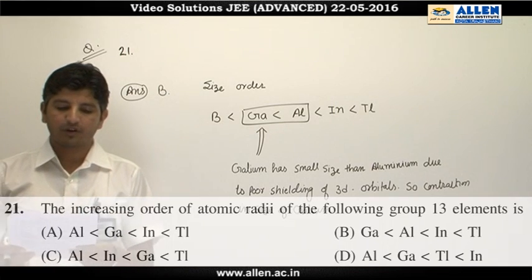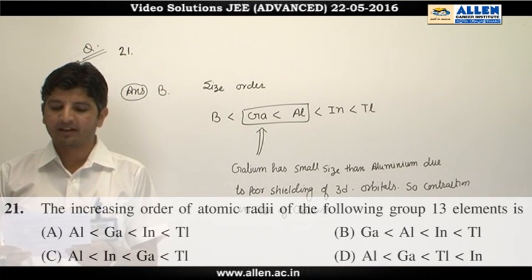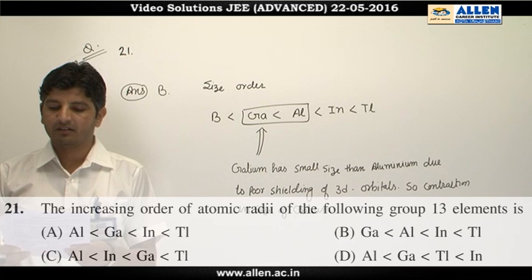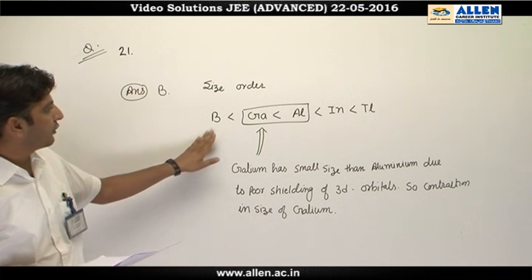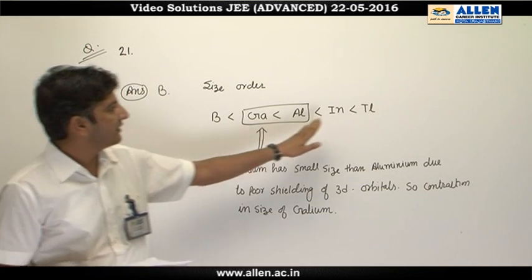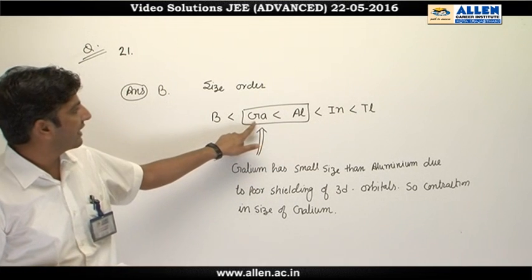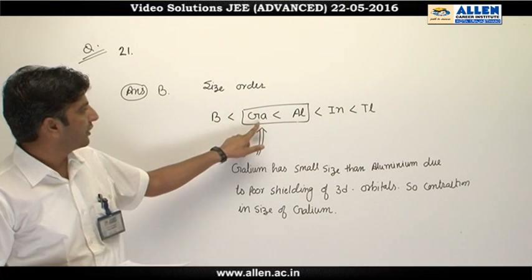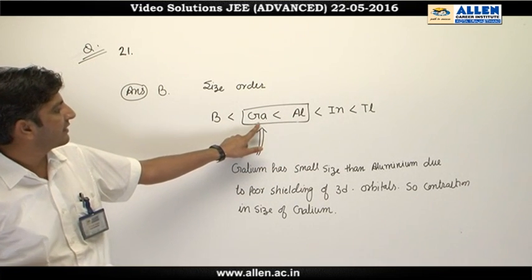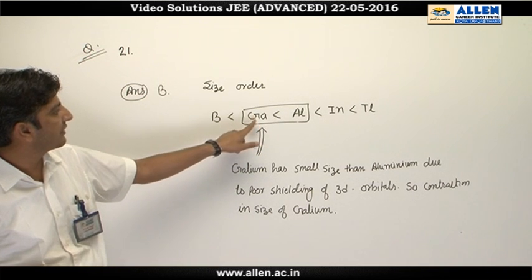Question number 21. The increasing order of atomic radii of the following Group 13 elements: going down the group, the atomic radii of Group 13 elements increase.